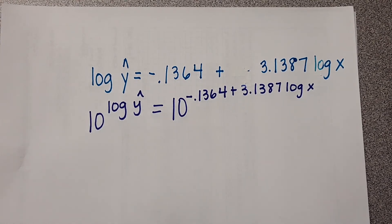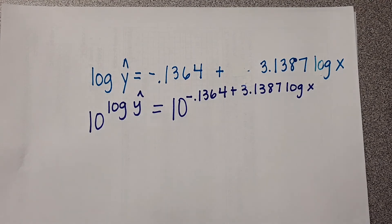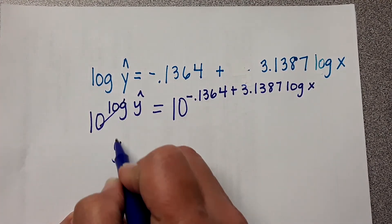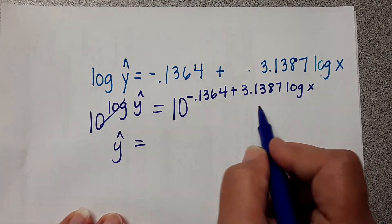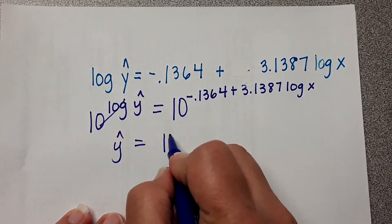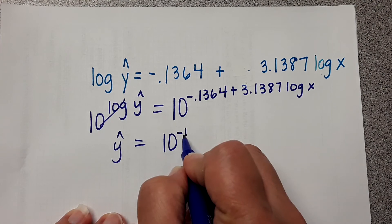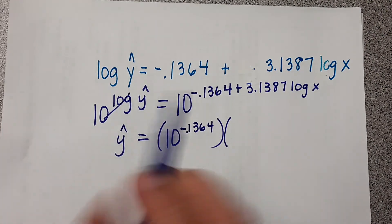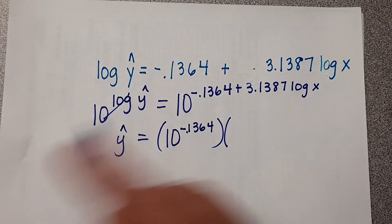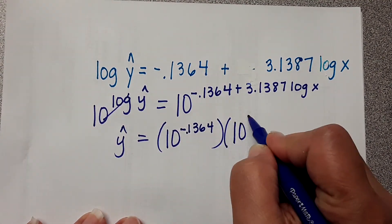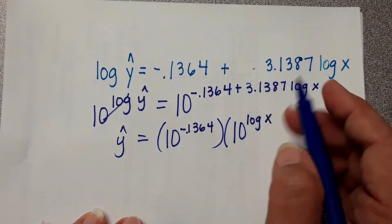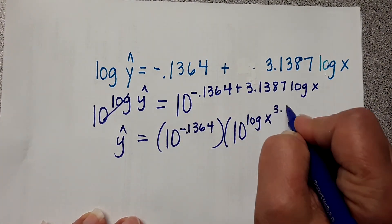This is the equation we got in our calculator, and now we're transforming it. These cancel out and you're left with y-hat. This side over here is going to be a little bit different. So we're going to do 10. Now with logs, if you remember with logs, you're going to write 10 log x, and this number right here becomes the exponent.